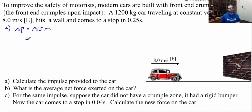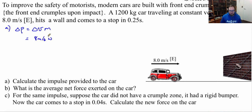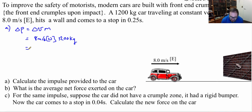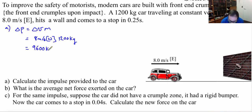The change in velocity is from 8 meters per second east to 0 meters per second, which means a change of 8 meters per second west. Mass stays the same at 1200 kilograms. So when we calculate the impulse, we get 9600 kilograms meters per second west.